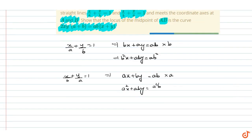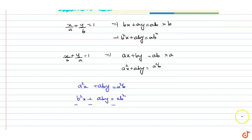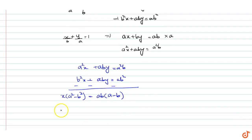To find the point of intersection, we solve a²x + ab·y = a²b and b²x + ab·y = ab². Subtracting, we get x = ab/(a + b).